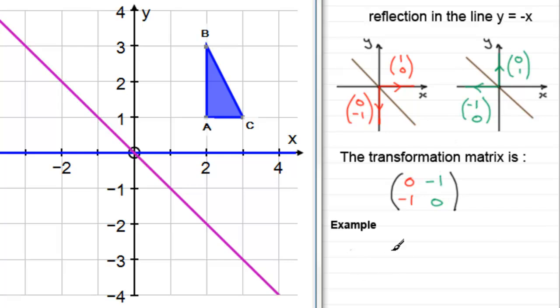To test this out, all we need to do is an example. We'll take our transformation matrix, in this case zero minus one, minus one zero, and we'll multiply it by the shape matrix for the shape ABC. We do that by just taking the position vectors of each of the vertices A, B, and C.